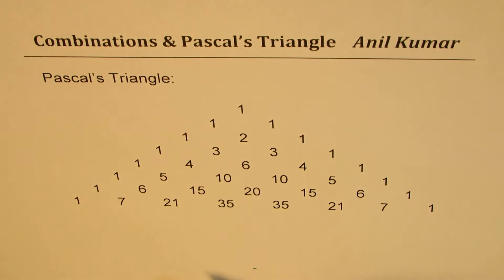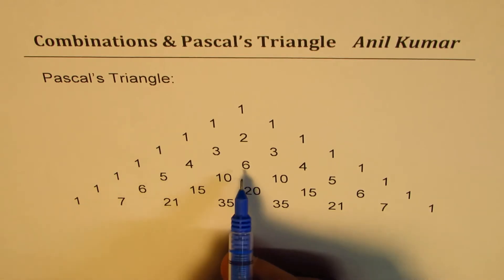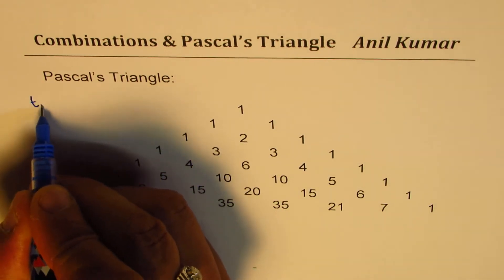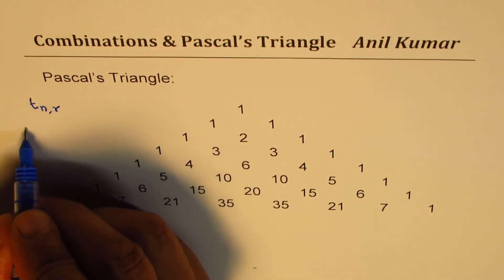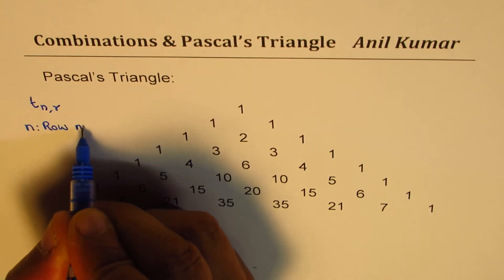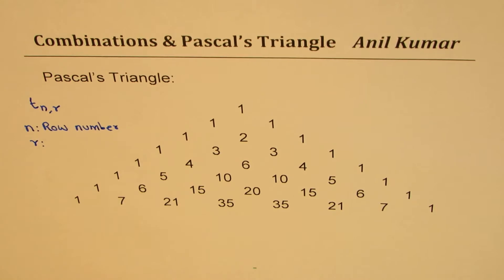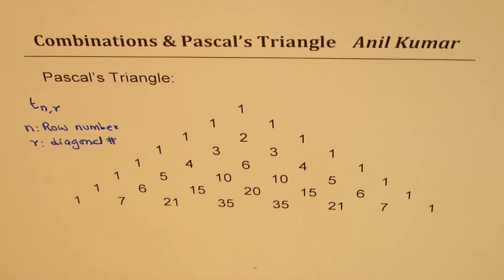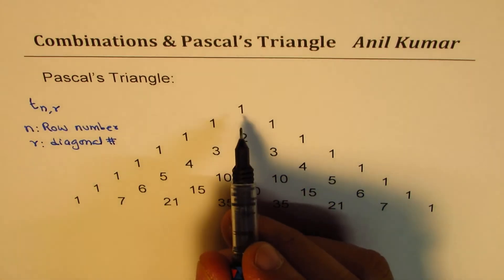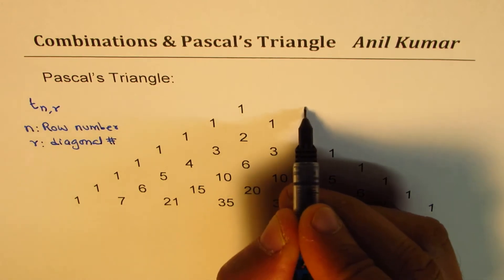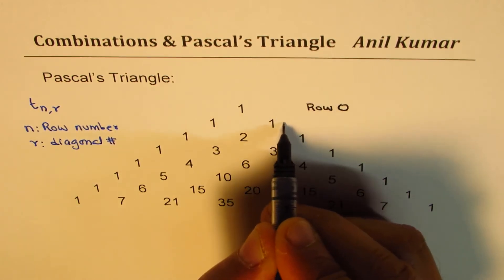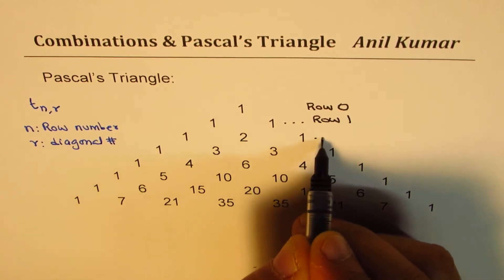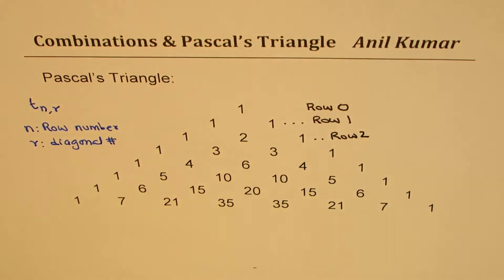The kind of triangle we have here is called Pascal's triangle. Every term can be very easily generated. We normally write a term as T(n,r), where n is the row number and r is called the diagonal number. You should also note that the value starts with zero, so this is row number zero, row number one, and then row number two.